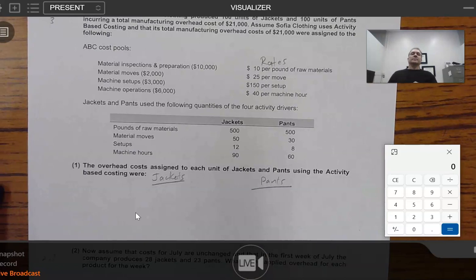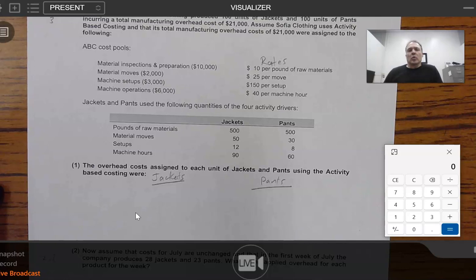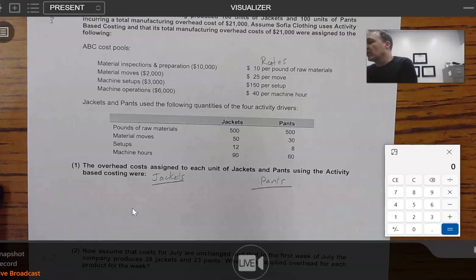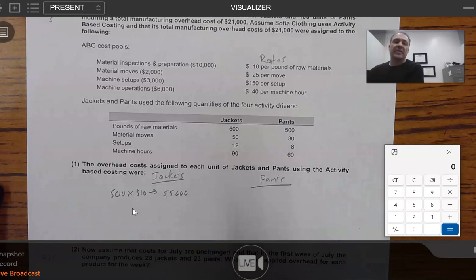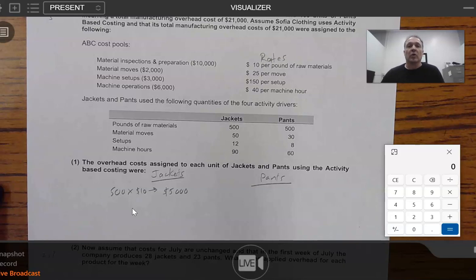What do we need to do? So, let's start with jackets. Since we wrote that down first, we've got 500 pounds of materials at a rate of $10 applied to overhead for each of those pounds. So what do we do? Well, it's very basic. What we do, we merely take 500 times $10, and that's going to give us $5,000. And then we're going to continue doing this over and over again.